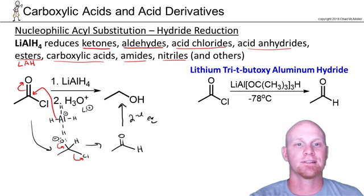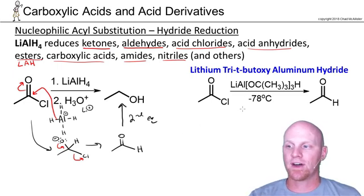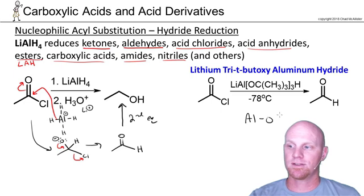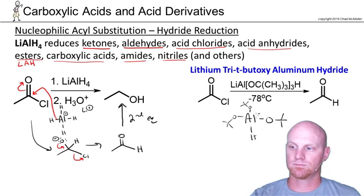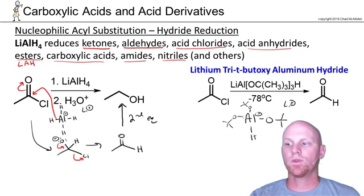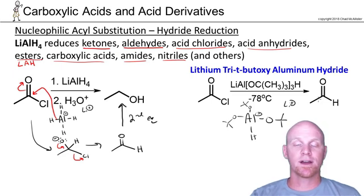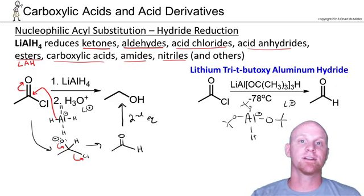If you want to stop at the aldehyde, instead of trying to add just one equivalent — which doesn't really work — we have a bulky hydride reagent: lithium tri-t-butoxy aluminum hydride. You've got your aluminum group bonded to a bunch of these t-butoxy groups. This bulky reagent only reacts once, so it simply does nucleophilic substitution, replaces the chlorine with the hydride, and you can stop at the aldehyde. This specific reagent works for acid chlorides and anhydrides, but not for any of the other carboxylic acid derivatives. So with an acid chloride, you have two options: lithium aluminum hydride goes all the way to a primary alcohol; the bulky hydride reagent stops at the aldehyde.